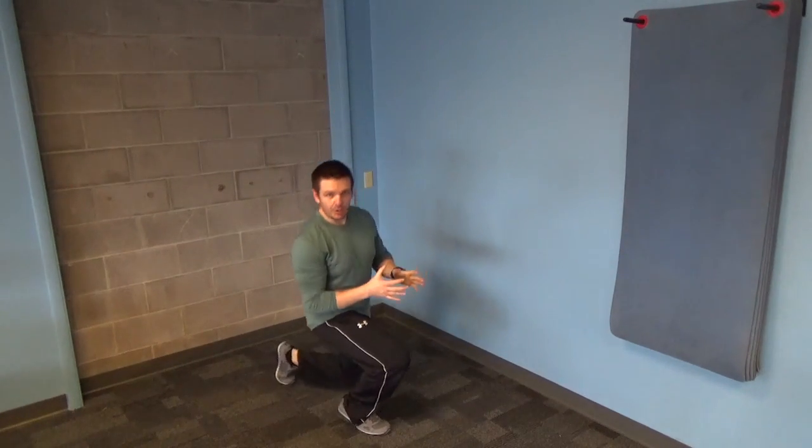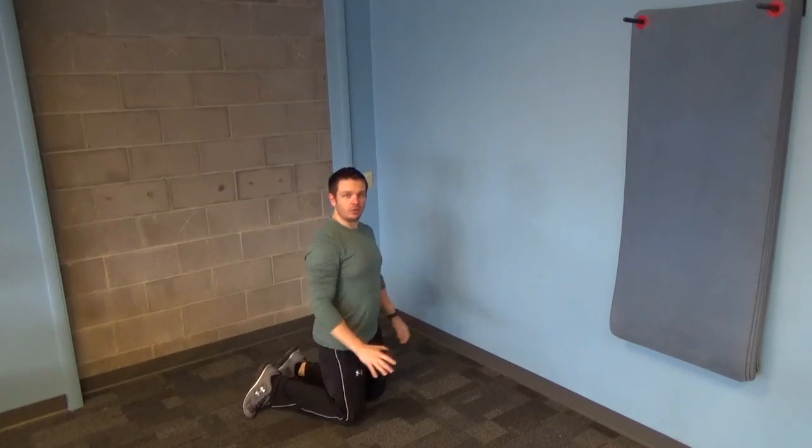The first exercise is called the knee to elbow. You're going to begin down in a push-up position with the hands directly below the shoulders.